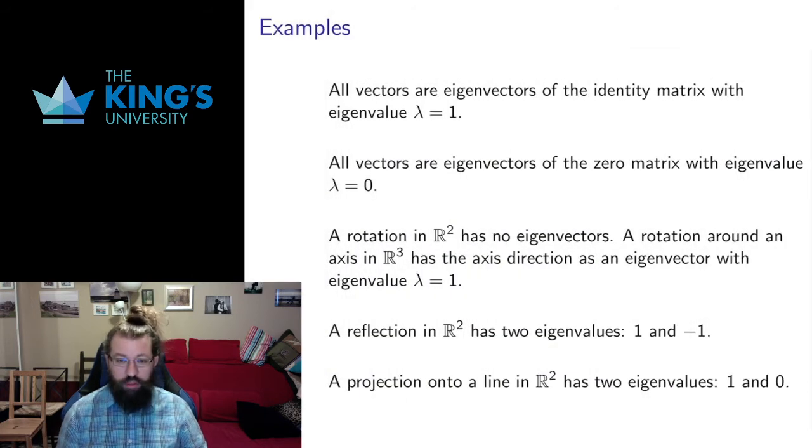For now, I want to go through a bunch of examples just to make sure we understand what the concept is. Take the identity matrix. The identity matrix doesn't do anything to any vectors. All vectors stay in the same place. That means all vectors are eigenvectors, and the eigenvalue they have is 1, because they're just multiplied by 1.